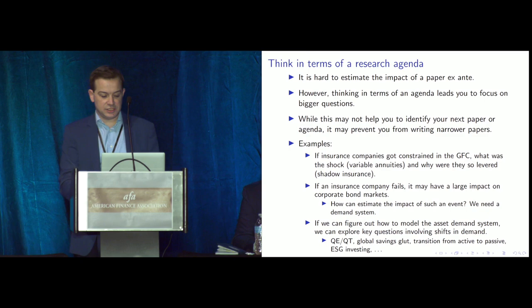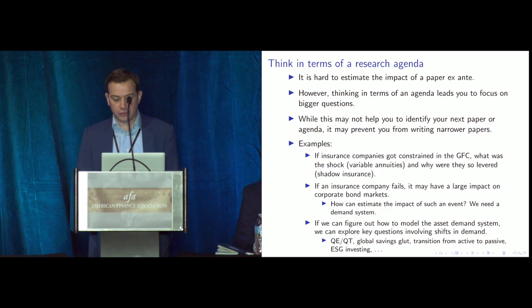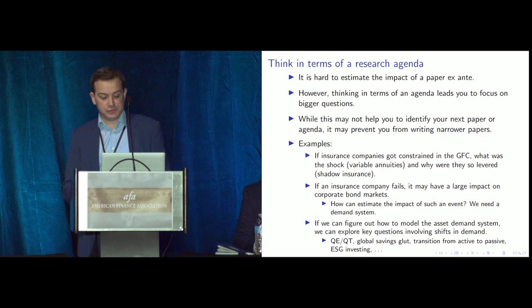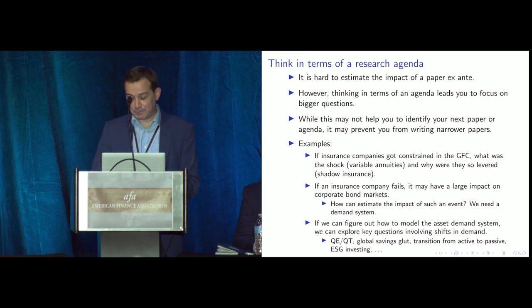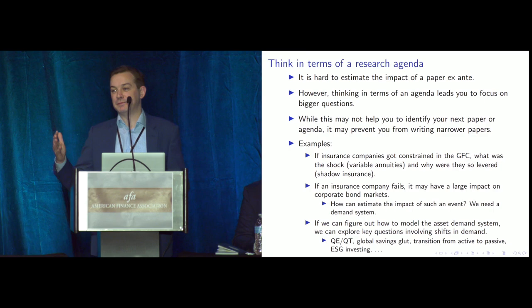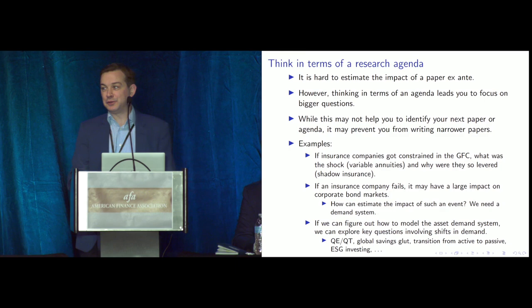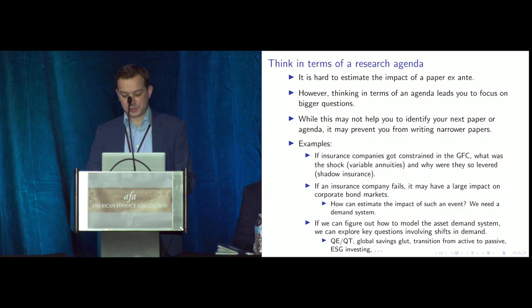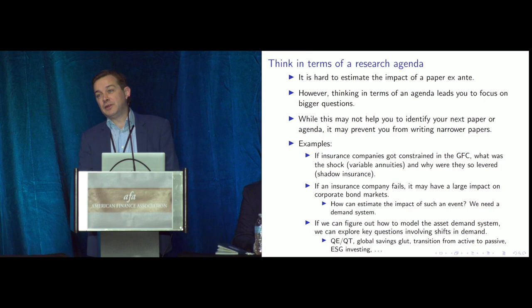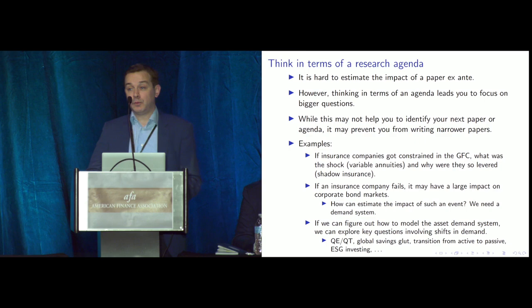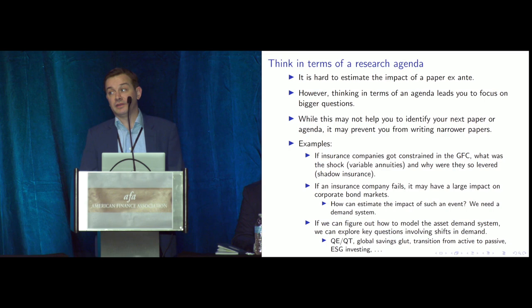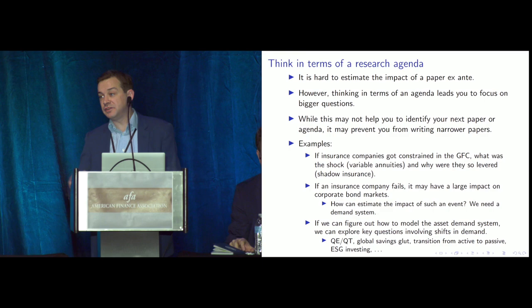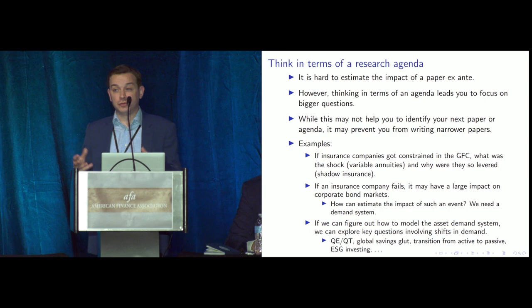There was also a nice segue to the asset demand systems agenda. Motohiro and I argued that if an insurance company were to fail, it would have a large impact on the corporate bond market since insurance companies are the largest investors there. But we couldn't answer how large that impact would be — our models aren't good at understanding big shifts in demand. That discomfort led us to start exploring demand systems, and we realized this hard problem connects to quantitative easing, global savings gluts, the shift from active to passive management, and ESG investing.